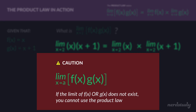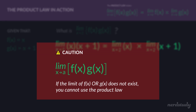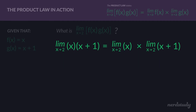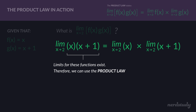If you try to use the product law and realize that either f of x or g of x simply does not have a limit, you have to stop yourself right away — make sure you're not using the product law in that situation. In this case, the linear function y equals x and the linear function y equals x plus one both have limits that exist when x is approaching 2.